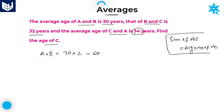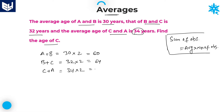Similarly, average of B and C is 32, therefore sum of B and C equals 32 into 2, which is equal to 64. And the average of A and C is 34, therefore sum of A and C equals 34 into 2, which is equal to 68.